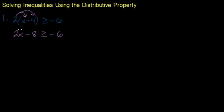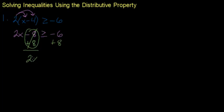Now that we've applied the distributive property, we have a two-step inequality. We're going to eliminate the constant — the minus eight — using the inverse operation, which is to add eight to both sides. So we add eight here and here, and on the right side we have negative six plus eight, a negative plus a positive, and we subtract to get two.